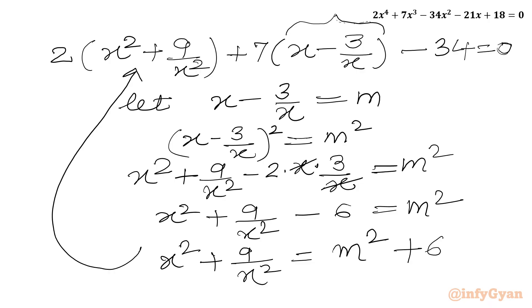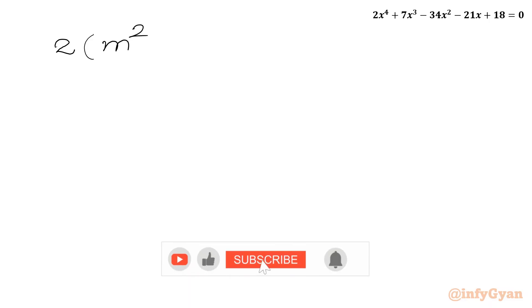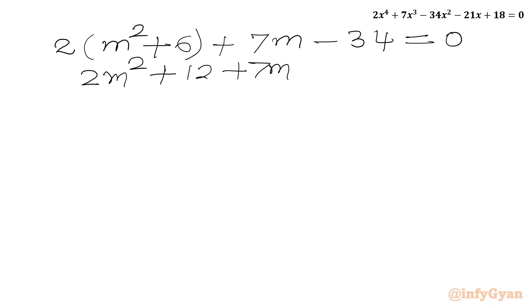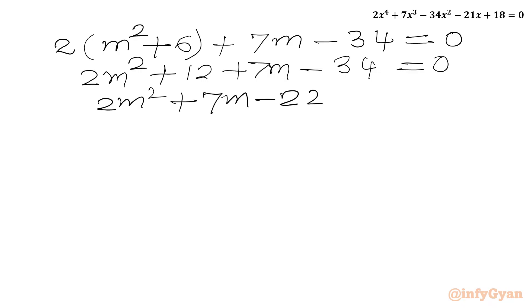So our equation becomes 2(m² + 6) + 7m - 34 = 0. Expanding the LHS: 2m² + 12 + 7m - 34 = 0, which simplifies to 2m² + 7m - 22 = 0.